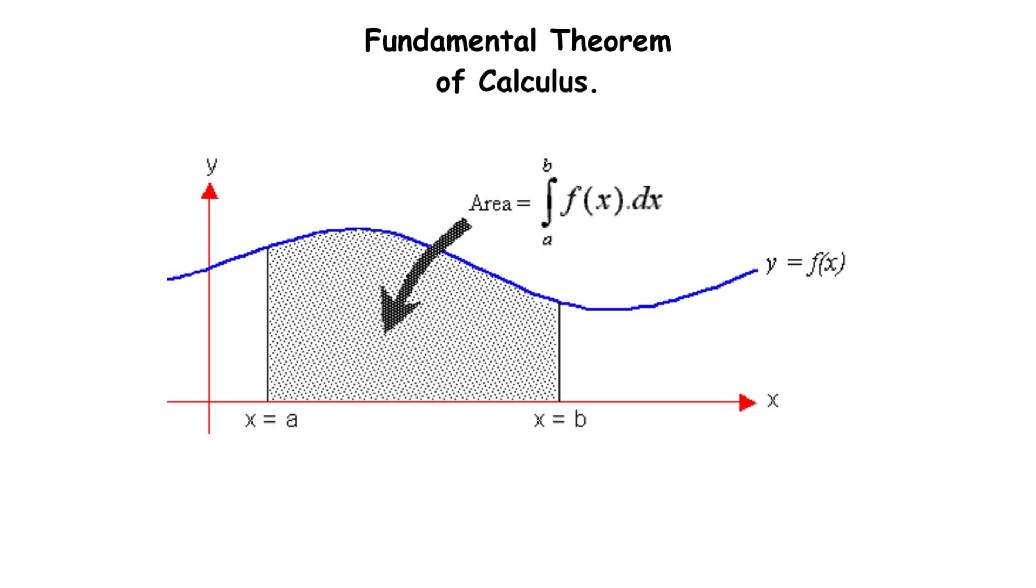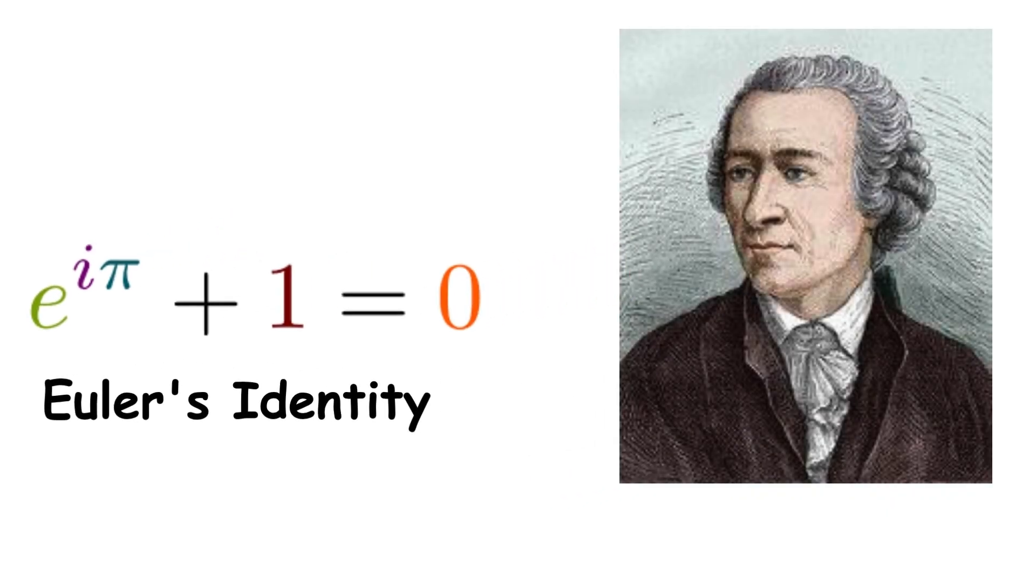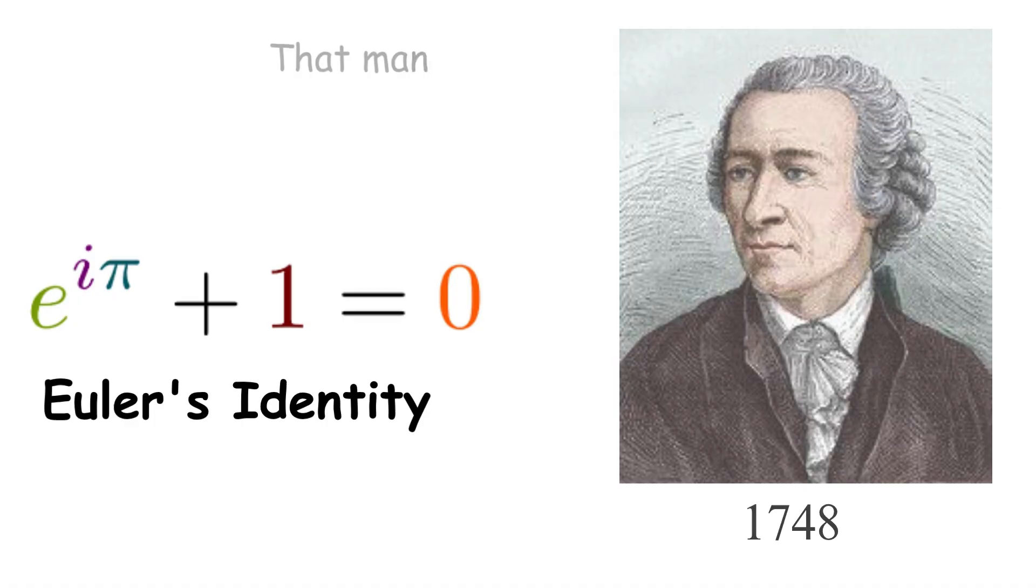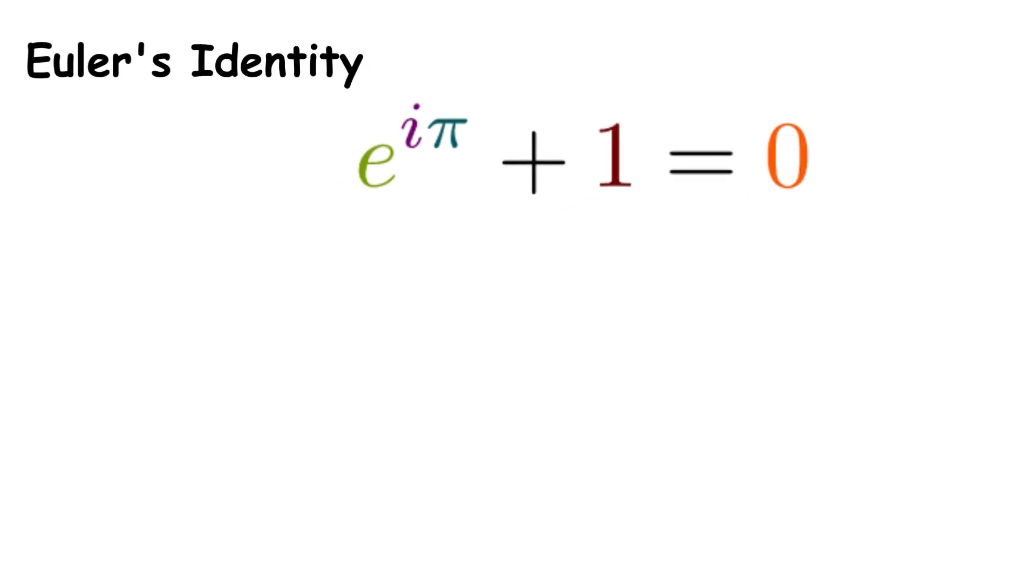Euler's Identity. Swiss mathematician Leonhard Euler discovered this equation in 1748 that many consider the most beautiful formula in all of mathematics. The identity states that e to the power i times pi plus 1 equals 0, connecting five of the most important numbers in mathematics in one elegant equation.